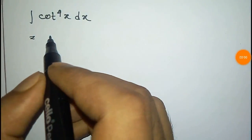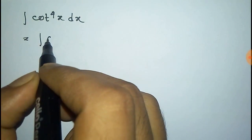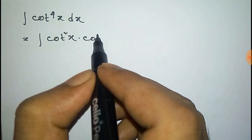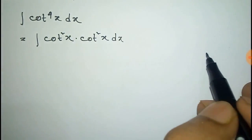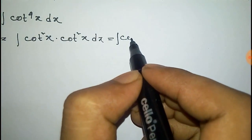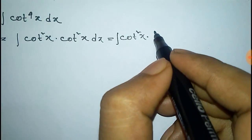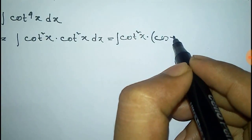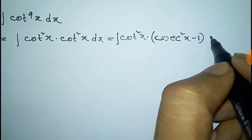We have to integrate cot to the power 4x dx. We can write cot to the power 4x as the product of cot square x into cot square x. This cot square x can be written as cosec square x minus 1, into dx.